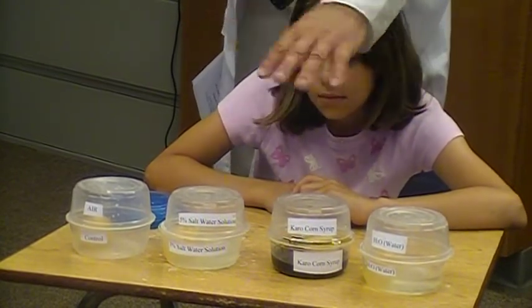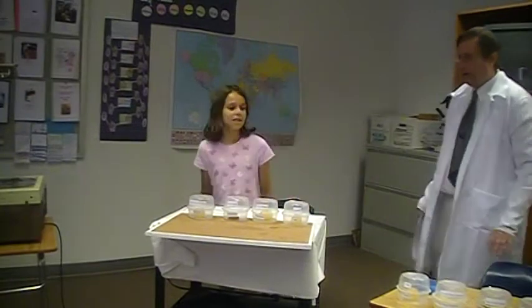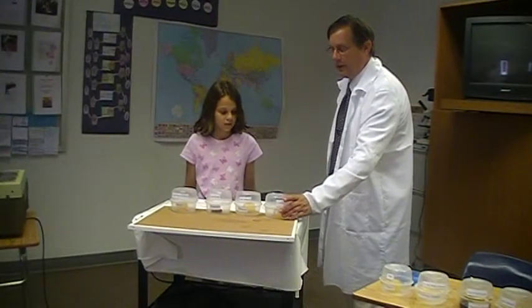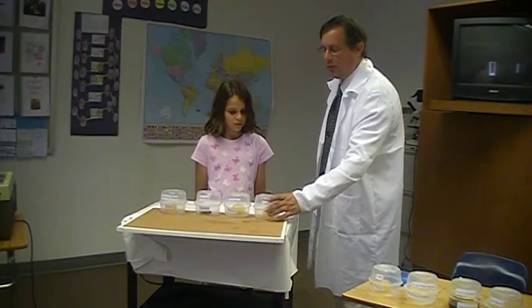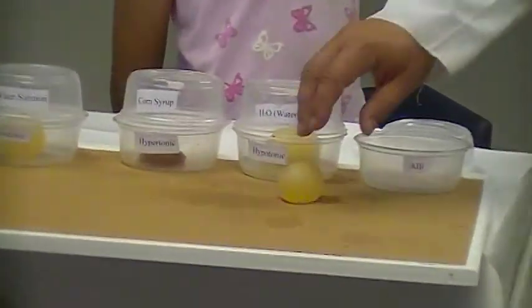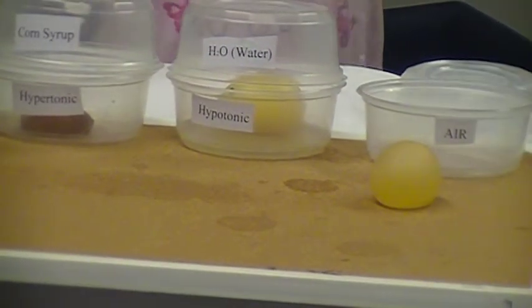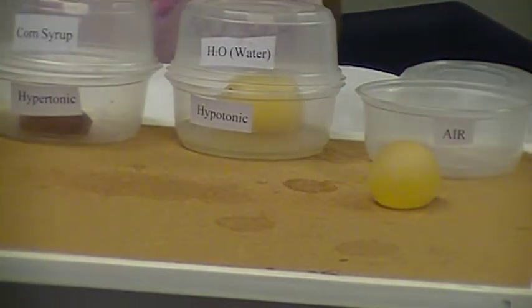We're going to leave these eggs in here for two days before we measure their change. Since we don't have two days to wait, I have previously set aside four eggs just like these in these containers and taken them out so we can see what happens after two days. Julia, can you move over to station three please? The first container here is labeled 'control group.' Julia, can you open that up? As you can see, the egg that was just sitting in nothing but air for the last two days is the same size it was when I placed it in this container two days ago. This is the egg we're going to use to model how these other eggs have changed or haven't changed.